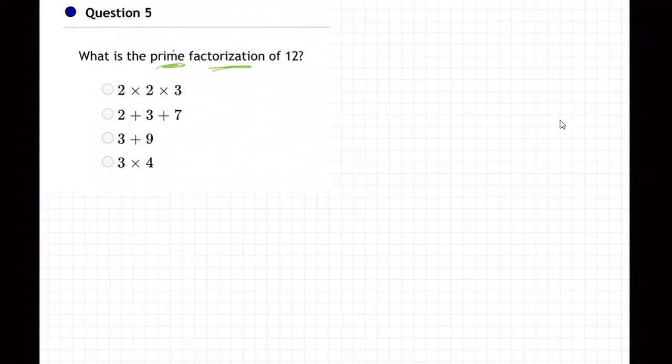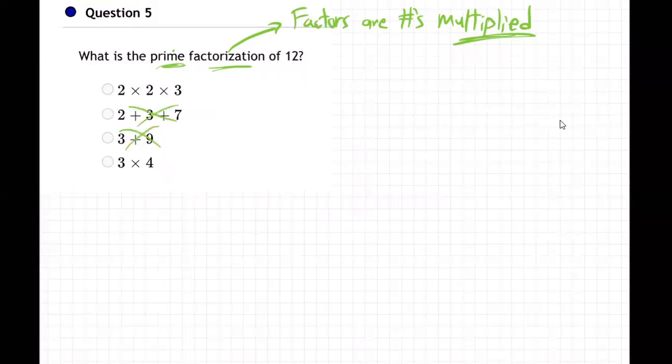That means factors are numbers multiplied. So it's not going to be this one or this one, right? Because those are added.